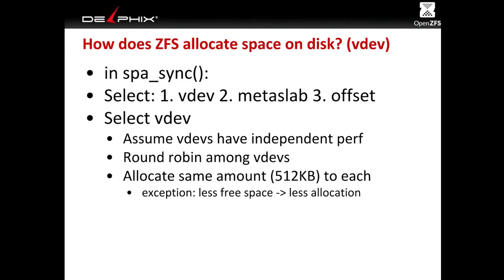There are three main steps to allocation. First, we figure out which device we want to allocate to — doing this for each of those 10,000 IOs. The first one comes along and we say: we need to allocate this first block. First, we figure out which device to write to. Then we tell the device to please allocate this. The device then needs to figure out which metaslab to allocate from. Once we've figured out the metaslab, we ask it to allocate, and it figures out the actual exact offset.